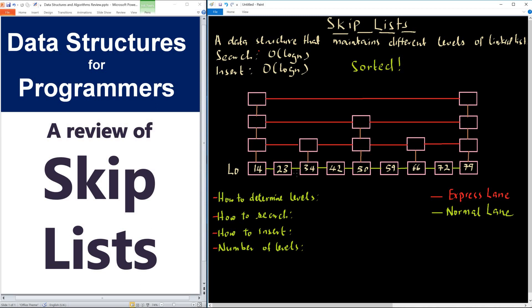The first list has how many items? The list L0 has nine items. List L1 has five items. L2 has three items, and L3 has two items.